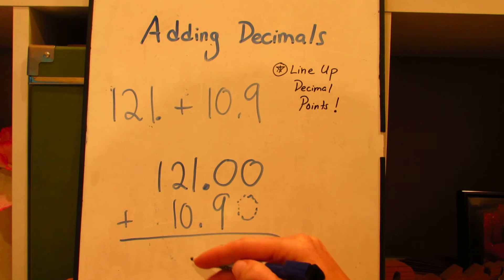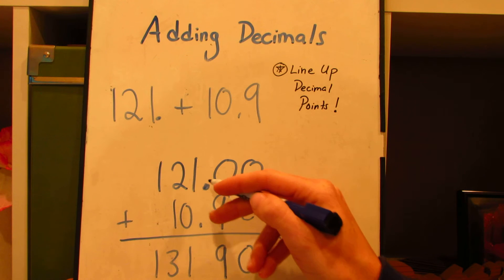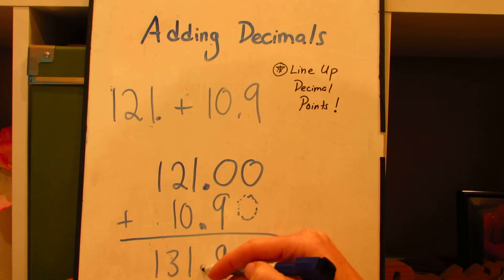0, 9, 1, 3, and 1. Bringing my decimal point straight down. 131 and 9 tenths or 90 hundredths.